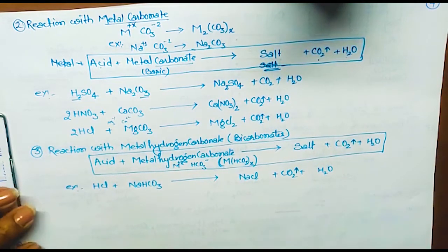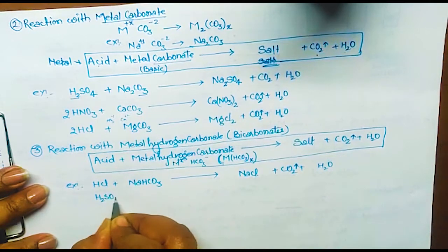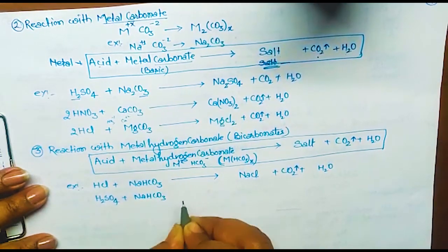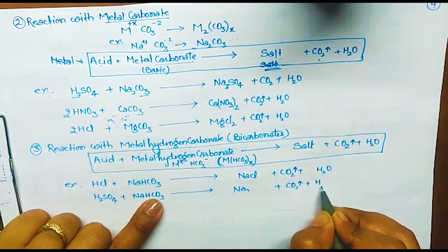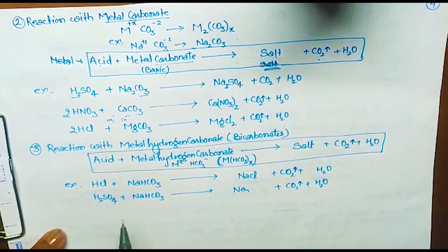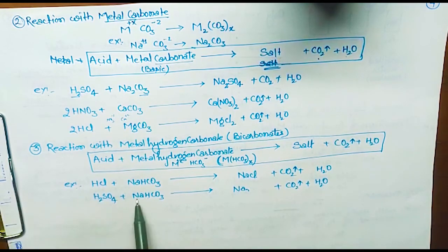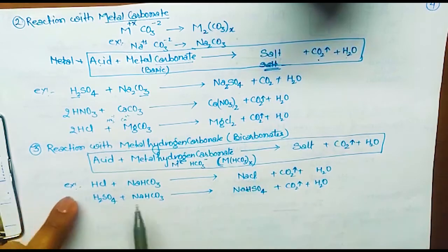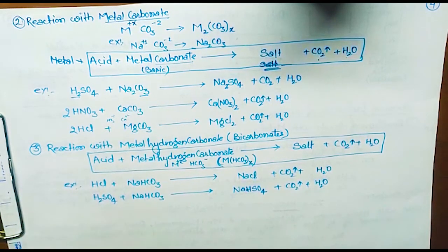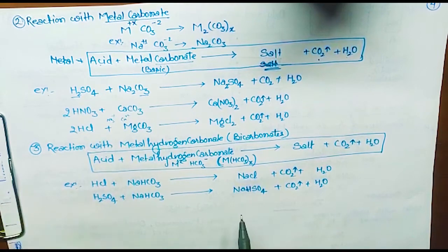Another example: H2SO4 reacting with NaHCO3. CO2 and water are the fixed products. Now checking hydrogen: H2SO4 has 2 H and NaHCO3 has 1 H — total 3 H. Two are used for water, so 1 H is left. Na, H, and SO4 remain, forming NaHSO4.